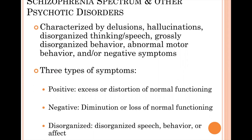The positive symptoms are an excess or a distortion of normal functioning. If we set a bar for what normal functioning is, positive symptoms would be the addition of things that are abnormal — seeing things that aren't there, hearing things that are not there. The negative symptoms drop below that normal bar, as something is being taken away. The disorganized symptoms are disorganized speech, behavior, or the way people show emotion.